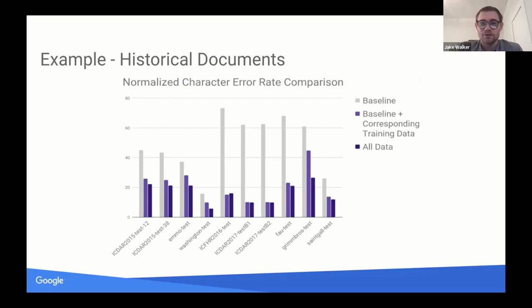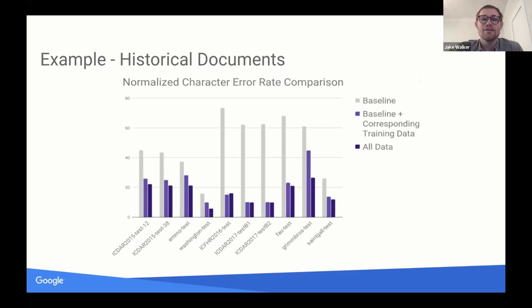These are pretty astoundingly large gains. Depending on how stylized the documents are and how out-of-domain they are from your normal training data, maybe that's not so surprising — but I was certainly surprised to see that you can roughly double effective performance on many datasets just by including a relatively small amount of targeted training data.